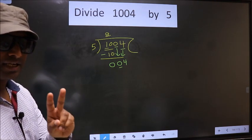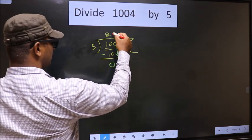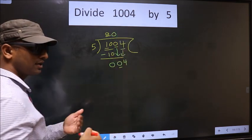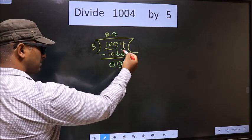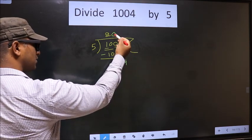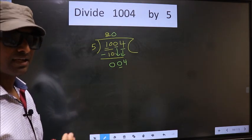Now remember this. Whenever you are bringing down two numbers, you must put 0 in the quotient. I repeat: whenever you are bringing down two numbers, you must put 0 in the quotient. Clear so far?